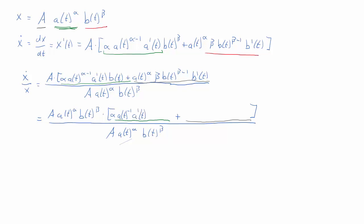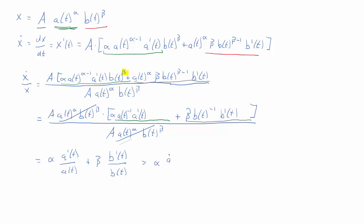I should note b(t)^β was present in the green term — that's exactly what we factored out so the green term is complete. For the gray term, a(t)^α is factored out and we are left with β times b(t)^(−1) times b'(t). After cancellation, we are left with a clean result: α times a'(t)/a(t) plus β times b'(t)/b(t) — that is α times the growth rate of a plus β times the growth rate of b. The growth rate of x is a function of the growth rates of a and b, this time pre-multiplied by these constants.